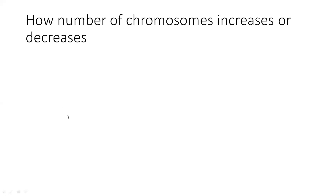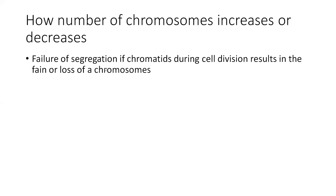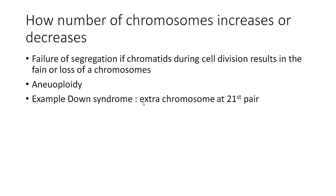How does the number of chromosomes increase or decrease? Failure of segregation of chromatids during cell division results in gain or loss of a chromosome. One condition is called aneuploidy — meaning only one extra or missing chromosome. Example: Down syndrome, which has an extra chromosome at the 21st pair. Aneuploidy means addition of one extra chromosome, and that is Down syndrome.